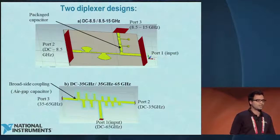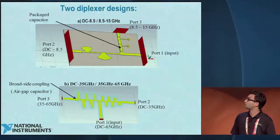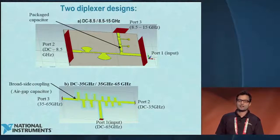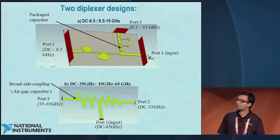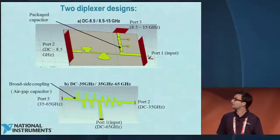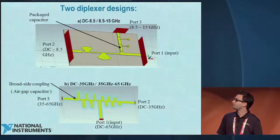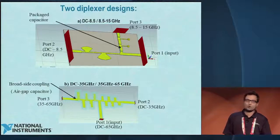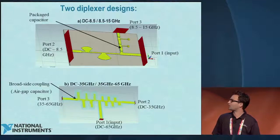These are two diplexer examples done at National Instruments. The first one is a pure PCB-based 15 gigahertz diplexer with an eight and a half gigahertz crossover frequency — port one is the input, port two is the low-pass, and port three is the high-pass — shown here in the 3D simulation environment. The second is a 65 gigahertz diplexer with a 35 gigahertz crossover frequency. I'm going to focus only on the capacitor modeling; I won't go into the full diplexer design.